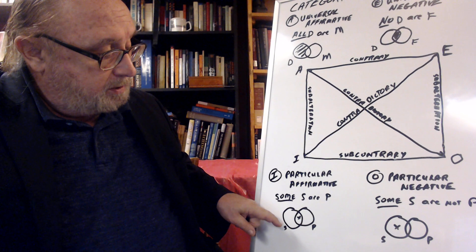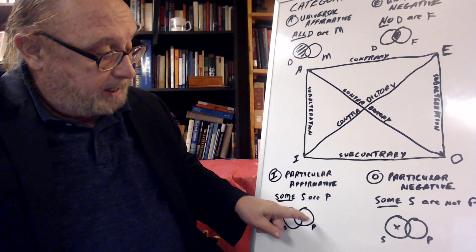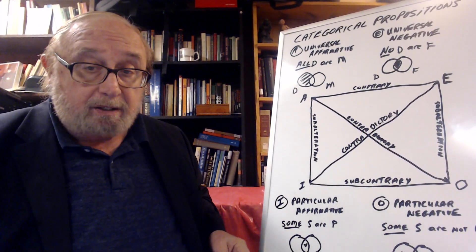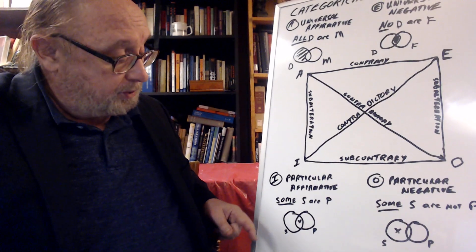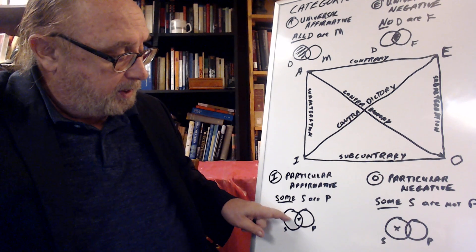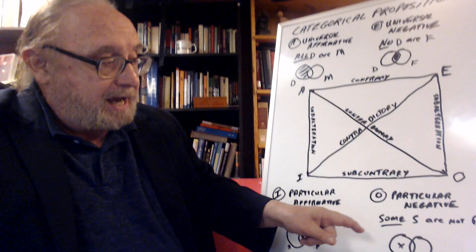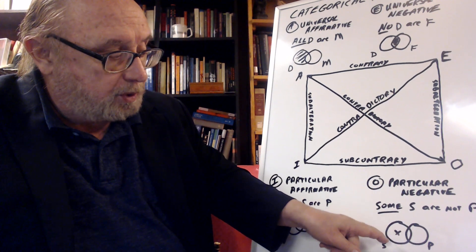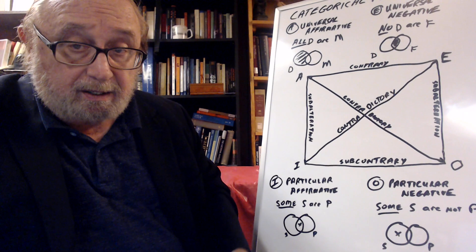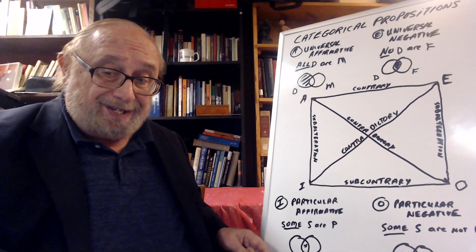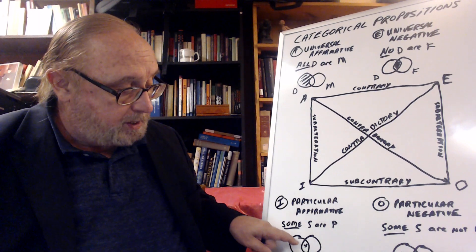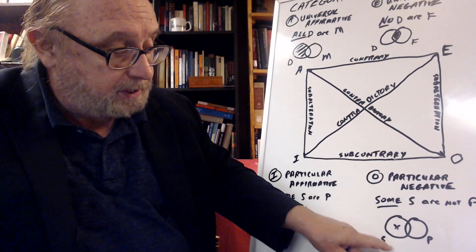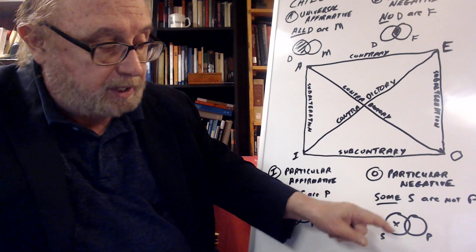Some — say some dogs are black — means that there's at least one dog. This is the dog category, this is the black category. So at least one dog — when you say some, it means at least one, it could be many more. At least one dog is black. So that's why you put the X there in the middle between the two circles to indicate that there are at least some dogs there. There are other dogs over here, but there's at least one or more there. And when you say some are not black, or some dogs are not beagles, that means there are some dogs which are over here in the dog category which are not in the beagle category. So the particular affirmative has an X in the middle showing that there's at least one thing where the two circles overlap, and the particular negative has an X in the subject category indicating that there's at least one subject which is not in the predicate category.